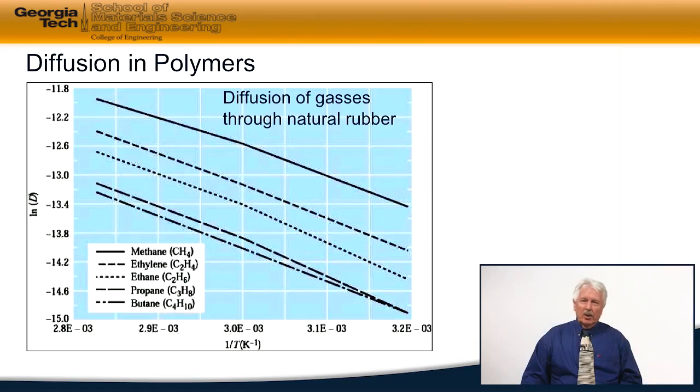What we're going to look at here are a variety of different gases, all the way from methane up to butane. Of course what you see is as you go from methane to butane you're increasing the amount of carbon that you have in the system, and therefore what you're doing in effect is to increase the radius of the molecule that's doing the diffusion.